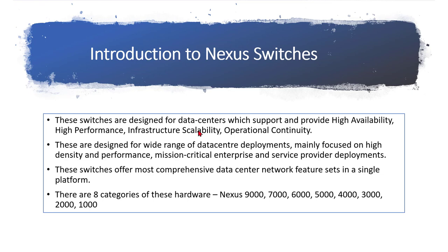Operational or business continuity means if there is an outage — whether at the switch level, supervisor level, or power module level — there should be no impact to the traffic or the environment. The purpose is that Cisco wanted to achieve zero downtime.